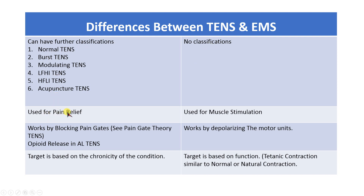TENS is used for pain relief, while EMS is used for muscle stimulation. TENS works by blocking the pain gates — you can refer to the pain gate theory for further description — and it can also release opiates, especially when using acupuncture-like TENS. EMS, on the other hand, works by depolarizing the motor units.